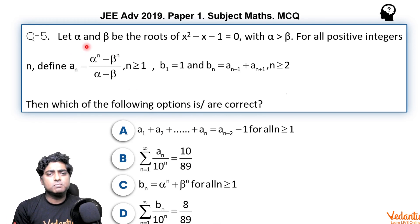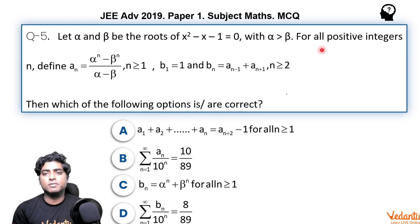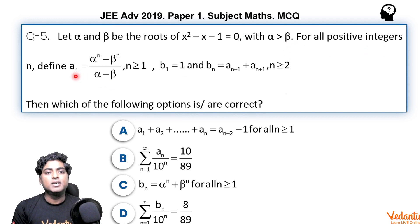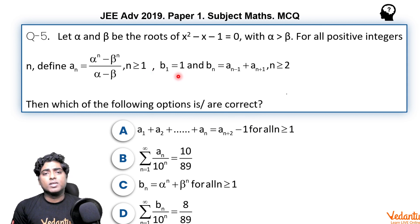It is related to the topic of quadratic equations, and it's a good problem. Let alpha and beta be the roots of x² - x - 1 = 0, with alpha greater than beta — alpha is the bigger root. For all positive integers n, they define a_n as (α^n - β^n) / (α - β) for n greater than 1.